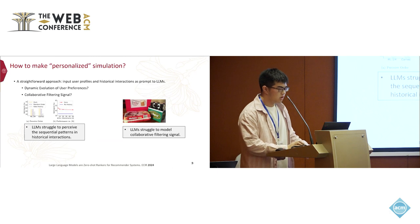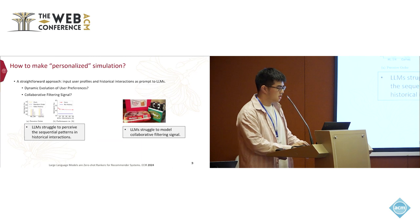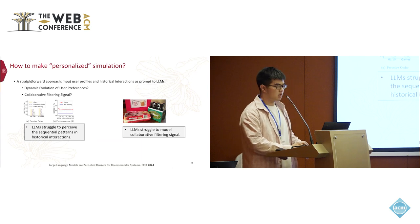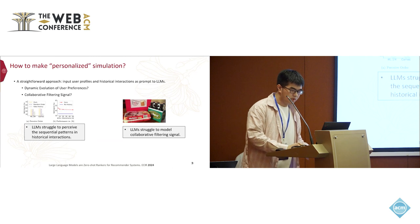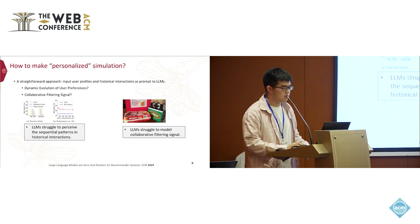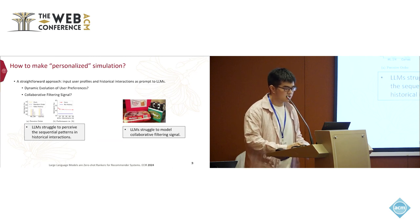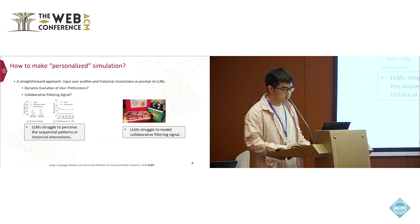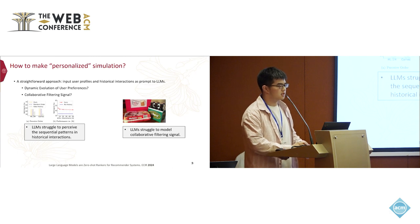While using recommender systems, the goal is to provide personalized service. Therefore, deploying agents in recommender systems requires simulating personalized agents. A straightforward approach is to input user profiles and historical interactions as prompts to the large language model, asking it to simulate user preferences. However, we found that this simple prompting method is ineffective, possibly for two reasons.